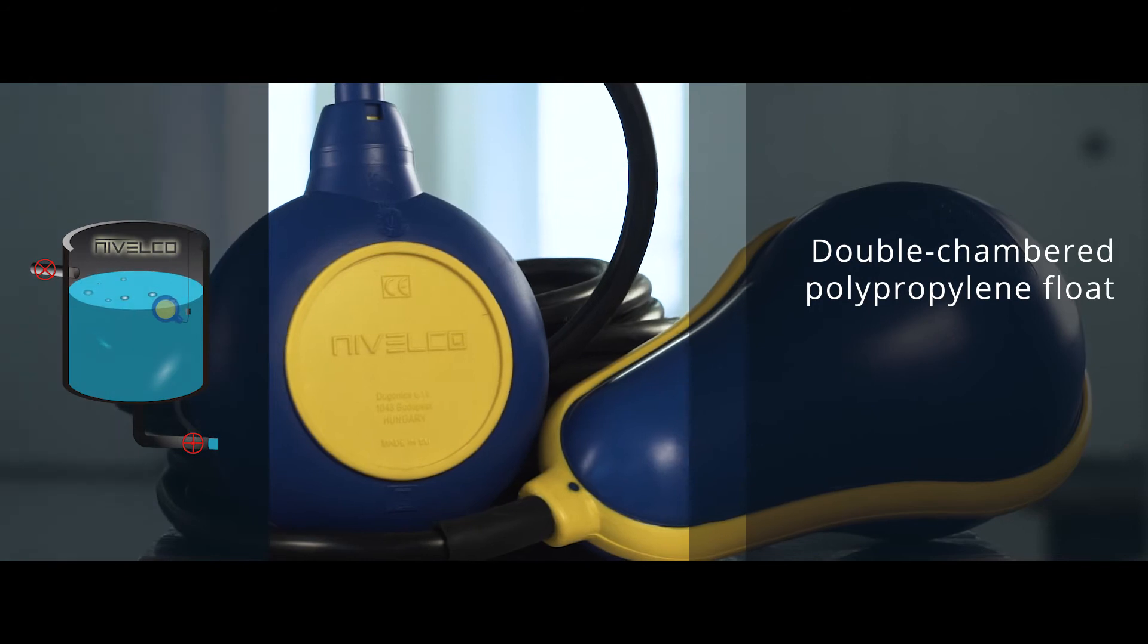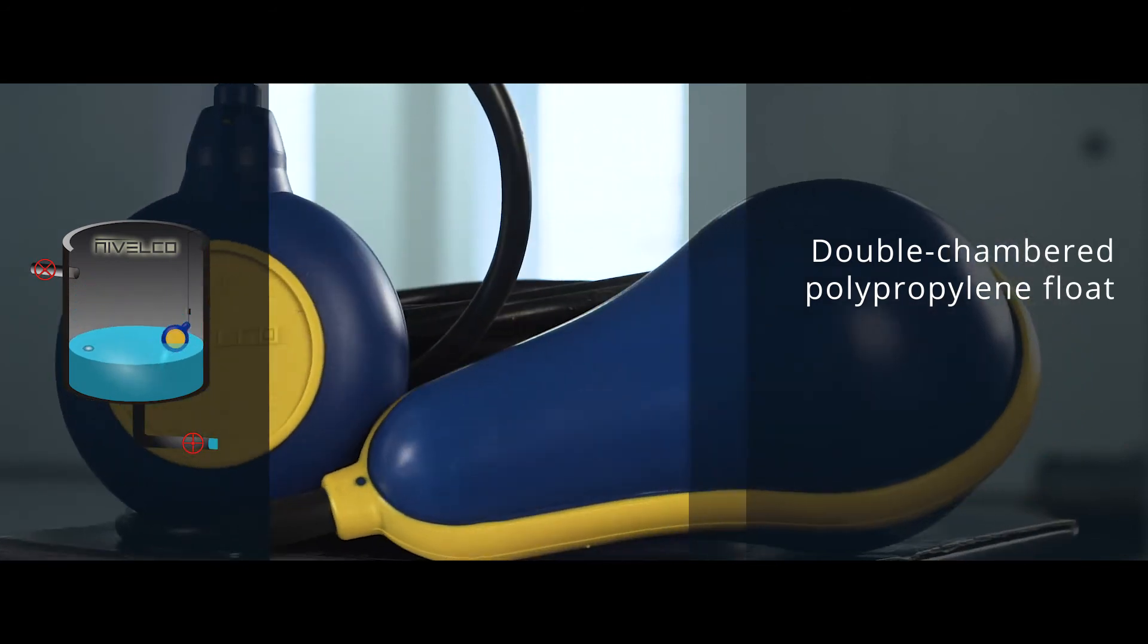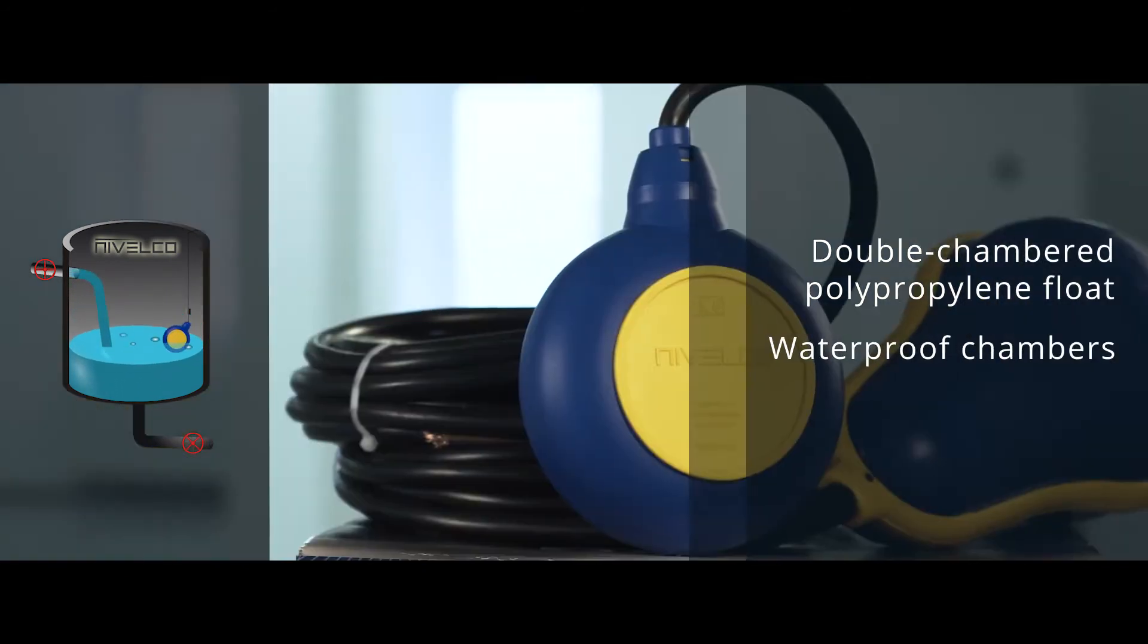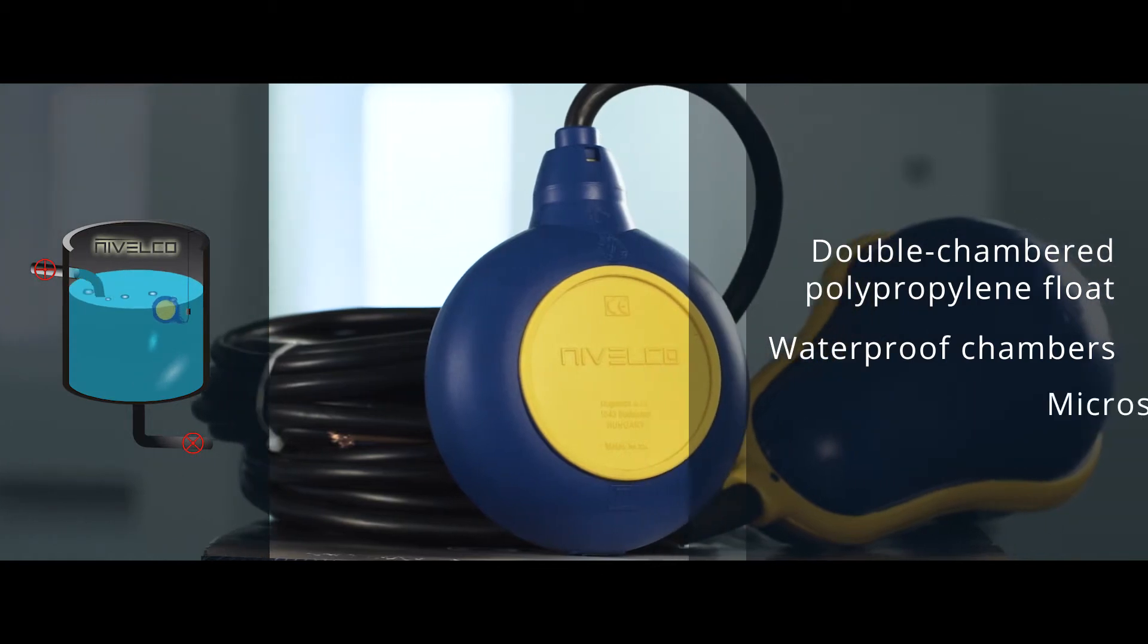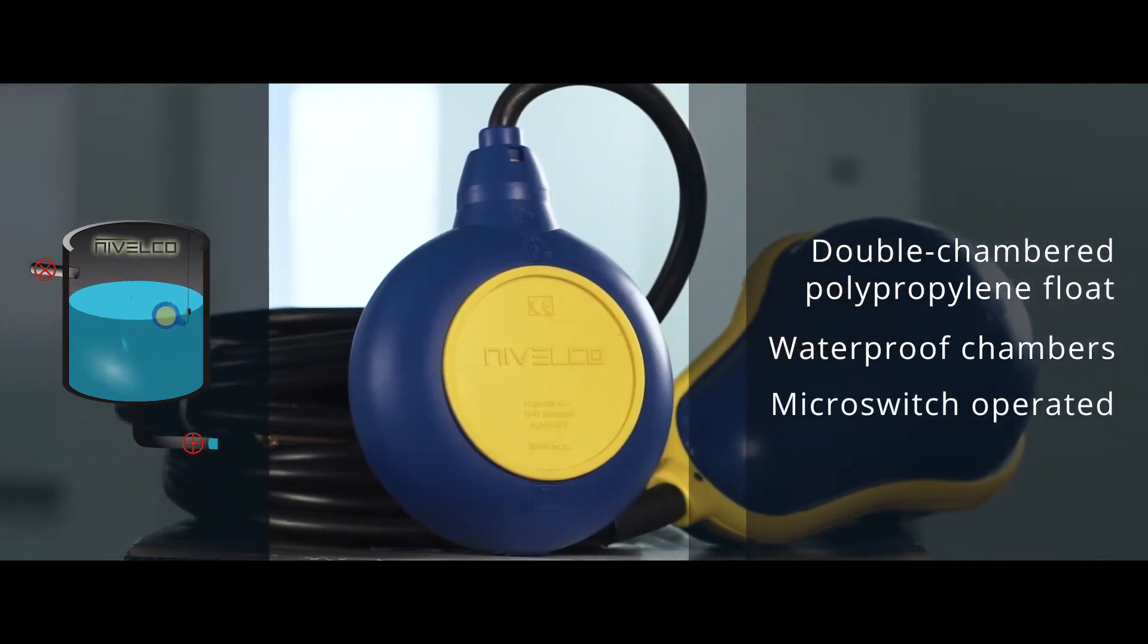The double chambered float is made of injection molded tough polypropylene that ensures good waterproof protection. The contacting micro switch is incorporated in the float.